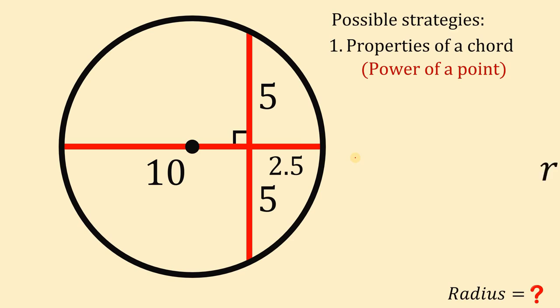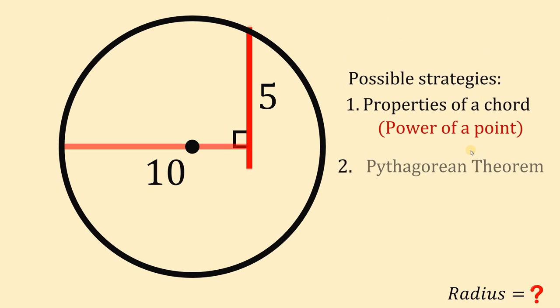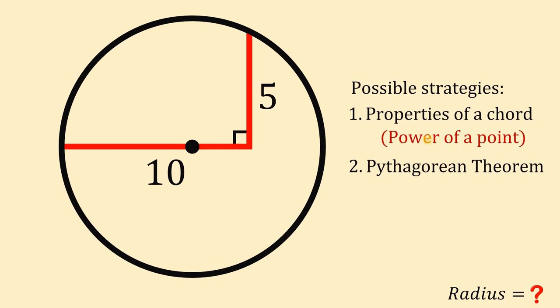Take note that the radius of this circle is half the diameter. We know the length of the diameter is 10 plus 2.5, or simply 12.5. So the length of the radius is 12.5 divided by 2, or simply 6.25. Therefore, using our first strategy, we get that the radius is 6.25 units.